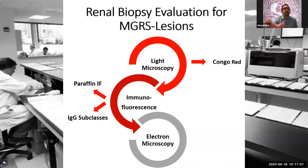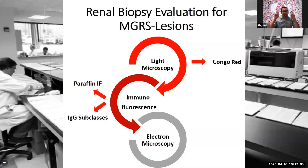The capability to do immunofluorescence on formalin-fixed paraffin-embedded tissue after antigen retrieval is important because there are a group of diseases that are masked. When you do immunofluorescence on routine frozen tissue, you don't see any immunoglobulins. But when you do this extra step, the deposits are unmasked — so that's definitely very important, because otherwise you could miss those diagnoses.